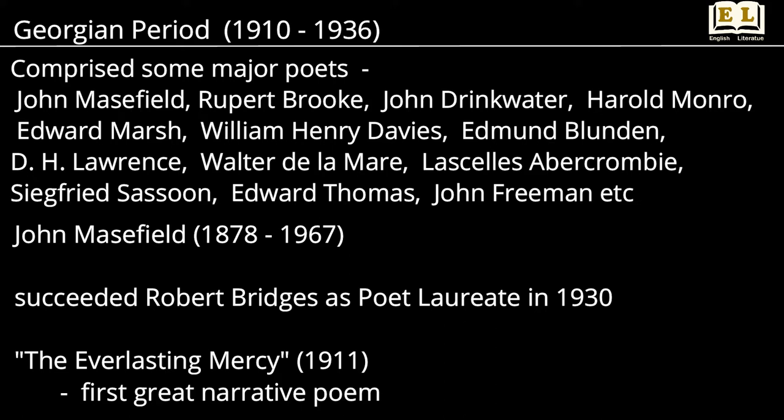The Georgian group comprised some major poets such as John Masefield, Rupert Brooke, John Drinkwater, Harold Monro, Edward Marsh, William Henry Davies, Edmund Blunden, D.H. Lawrence, Walter de la Mare, Lascelles Abercrombie, Siegfried Sassoon, Edward Thomas, John Freeman, etc.